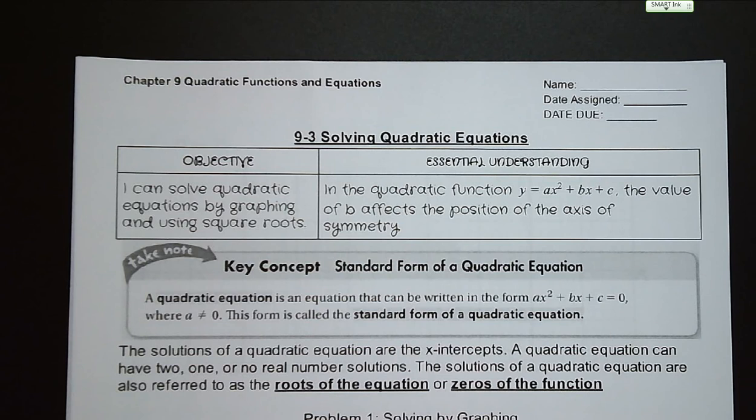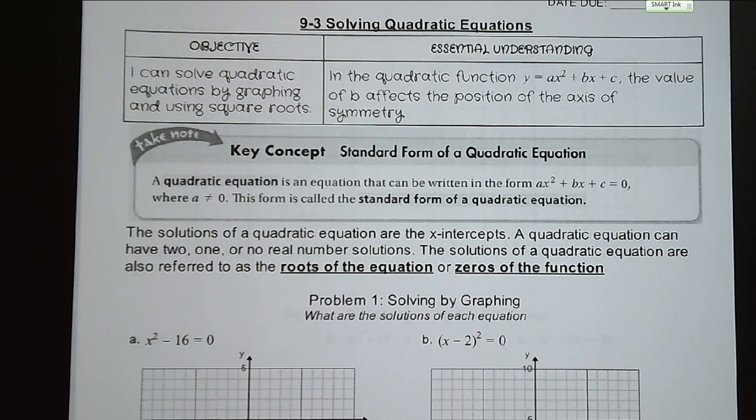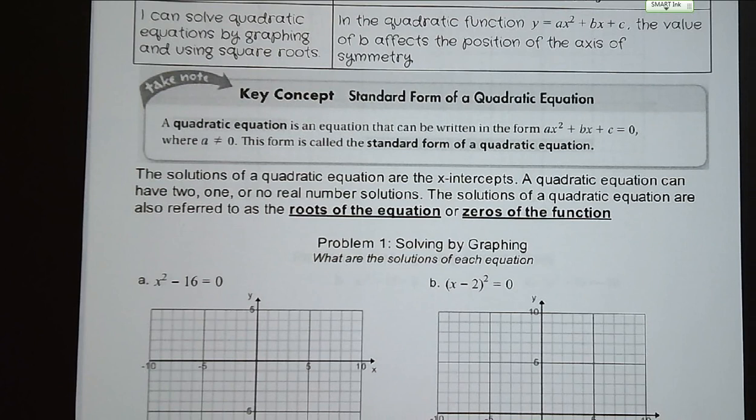In the quadratic function y equals ax squared plus bx plus c, the value of b affects the position of the axis of symmetry, and we are able to figure out where our vertex is. An equation that can be written in the form ax squared plus bx plus c equals zero is called the standard form of a quadratic equation. So standard form, we set it equal to zero.